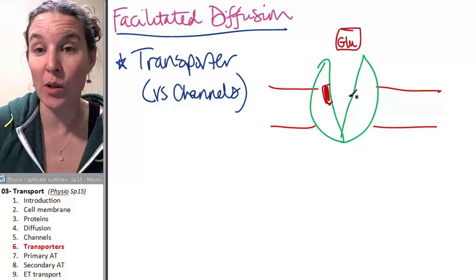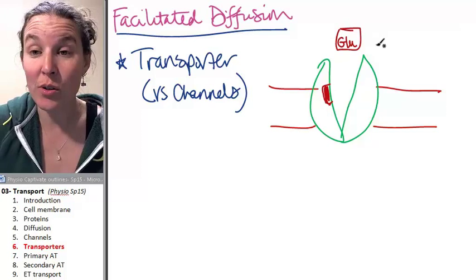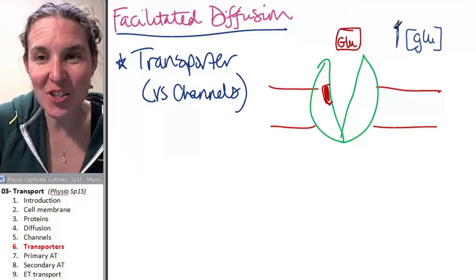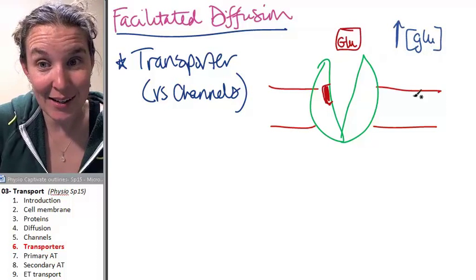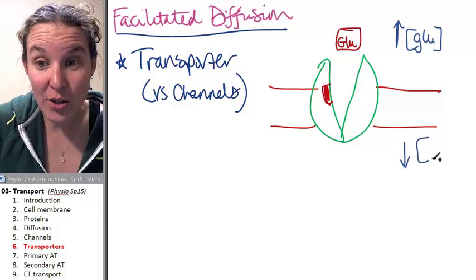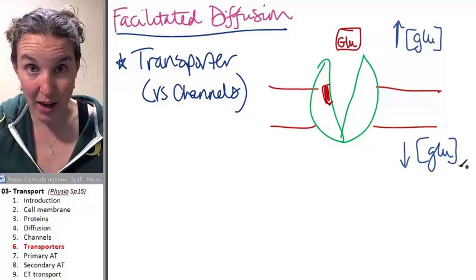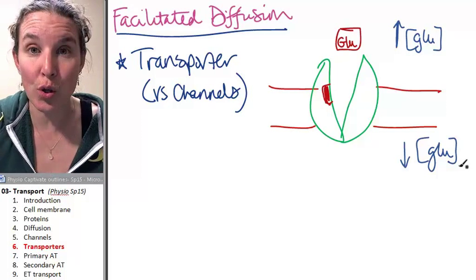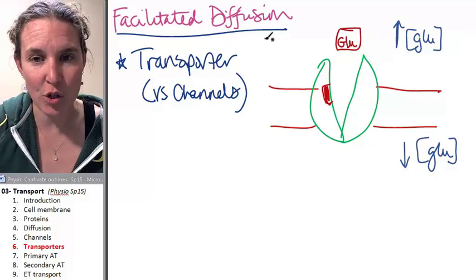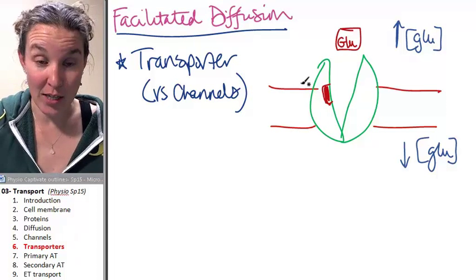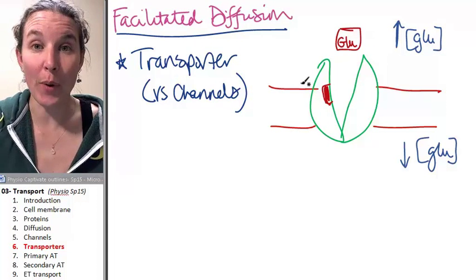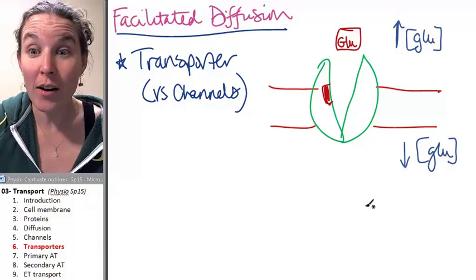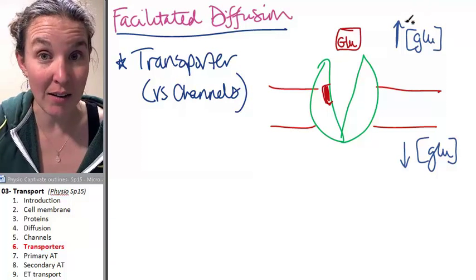If I want to take that glucose molecule and move it into the cell, what has to be true? We have to have a high concentration of glucose outside and a low concentration of glucose inside. Do you agree with that? Only if that is true will my facilitated diffusion transporter work. The interesting thing is that transporters can work both ways. They can move glucose into the cell in these circumstances, or if the circumstances change, they can move glucose out of the cell.